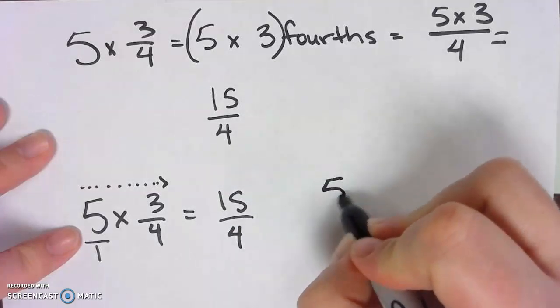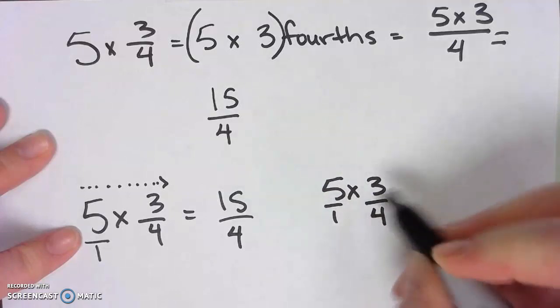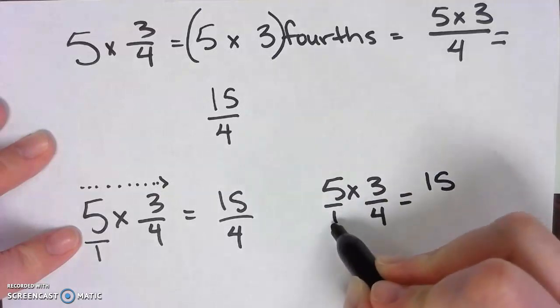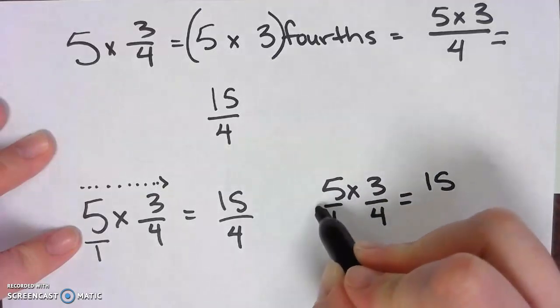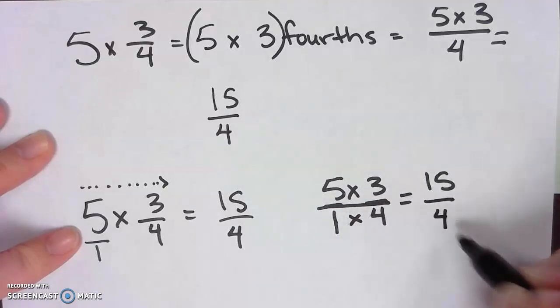Let's do it one more time. 5 times 3 equals 15, and 1 times 4 equals 4. Look, I can just make that one big fraction, equals 15/4.